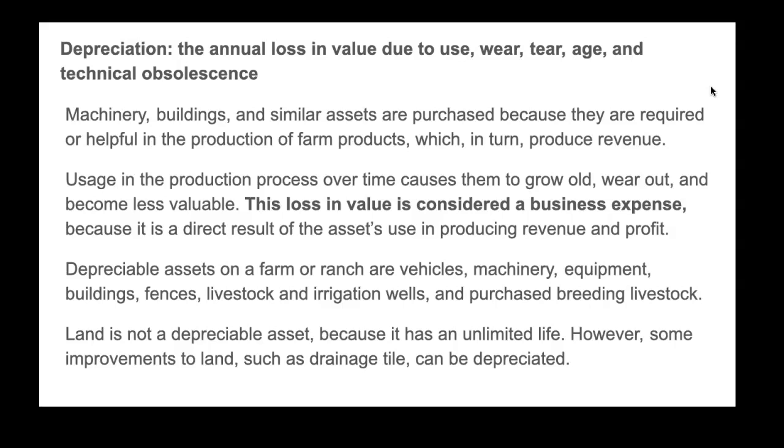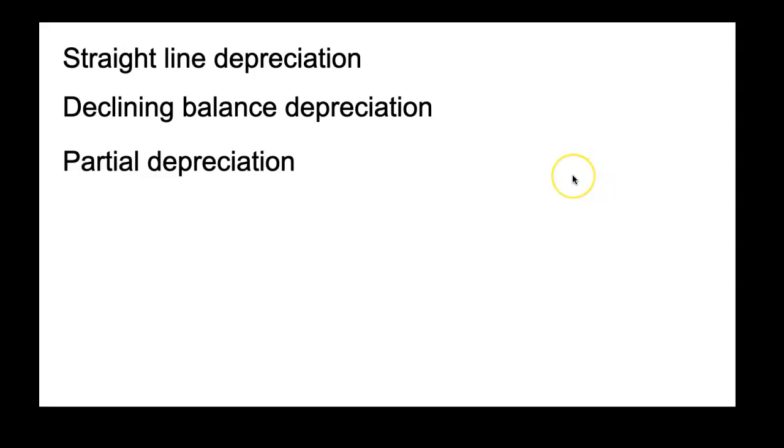There are three types of depreciation: straight line depreciation, which is very easy; declining balance depreciation, which is not very difficult; and a simplified mechanism called partial depreciation, which allows us to depreciate something if we buy it in the middle of a year, since we don't always go shopping for new equipment on January 1st.